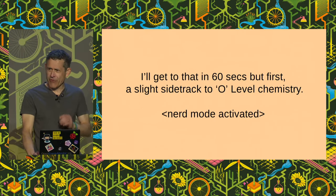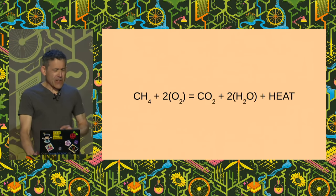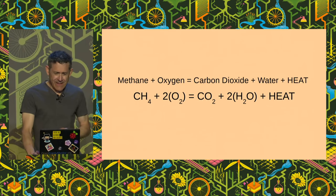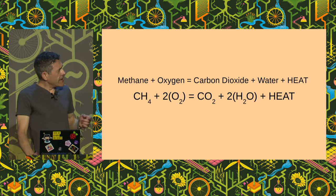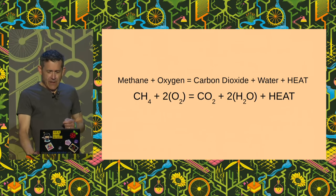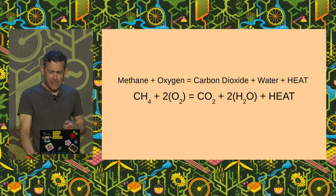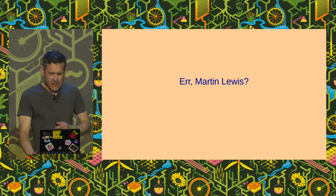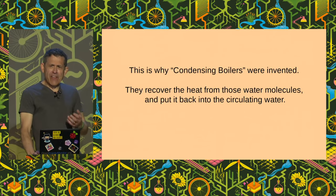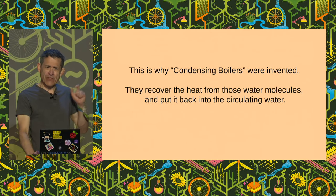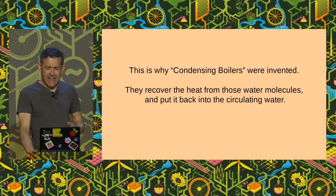First, one minute of O-level chemistry — no groaning, only one minute. This is what happens inside your gas boiler. On the right there's a molecule of methane, which is the expensive gas that we all buy. It needs two molecules of oxygen, which then gets converted into one molecule of carbon dioxide — which is causing all this nasty global warming — two water molecules, and an awful lot of heat.